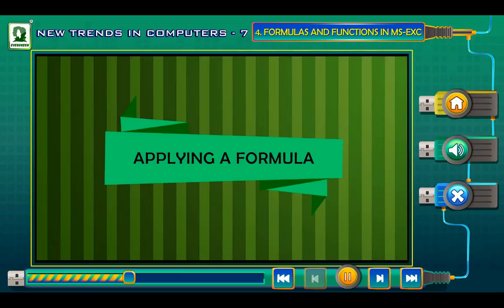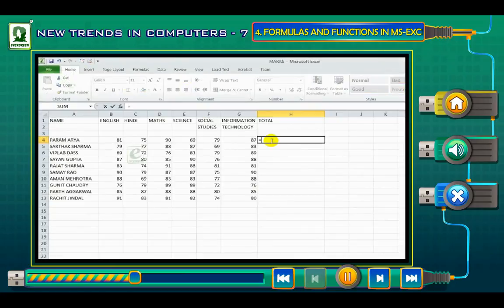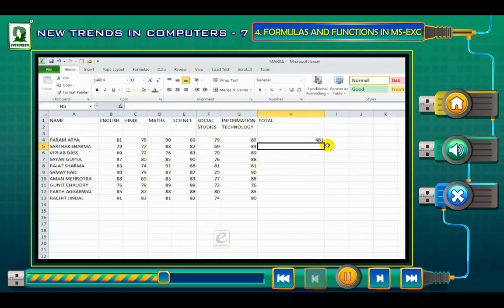Click on H4 cell and type = sign. Click on B4 cell and type + sign after that. Now click on C4 cell and type + sign after that. Repeat steps till G4. You can directly type =B4+C4+D4+E4+F4+G4. Press Enter key. You will see that the total of all the values from B4 to G4 has been displayed in H4 cell.